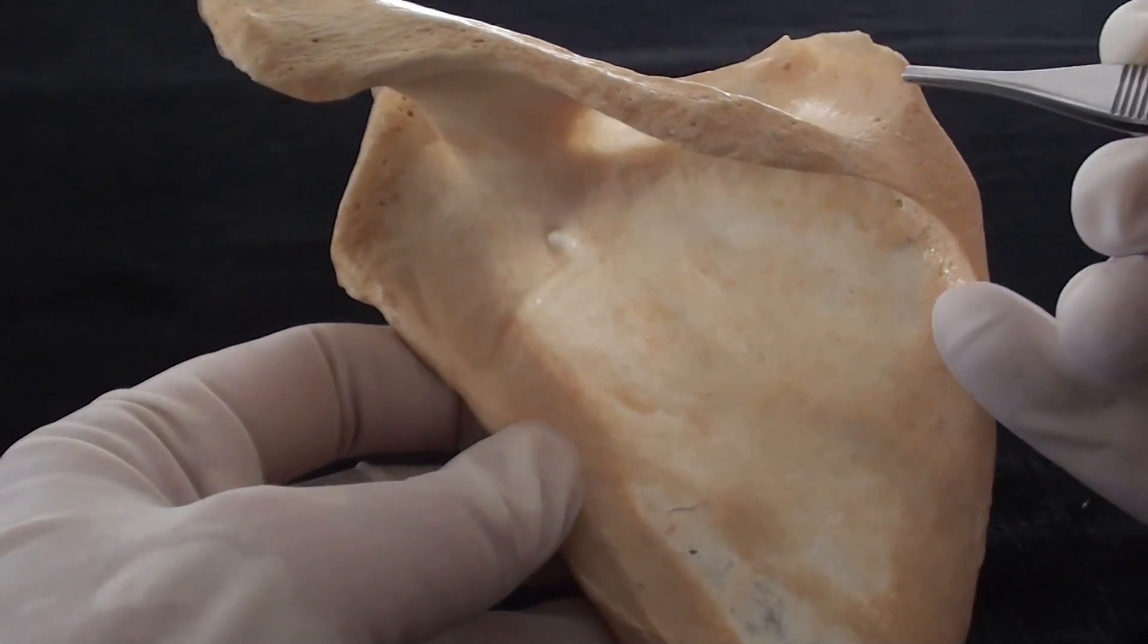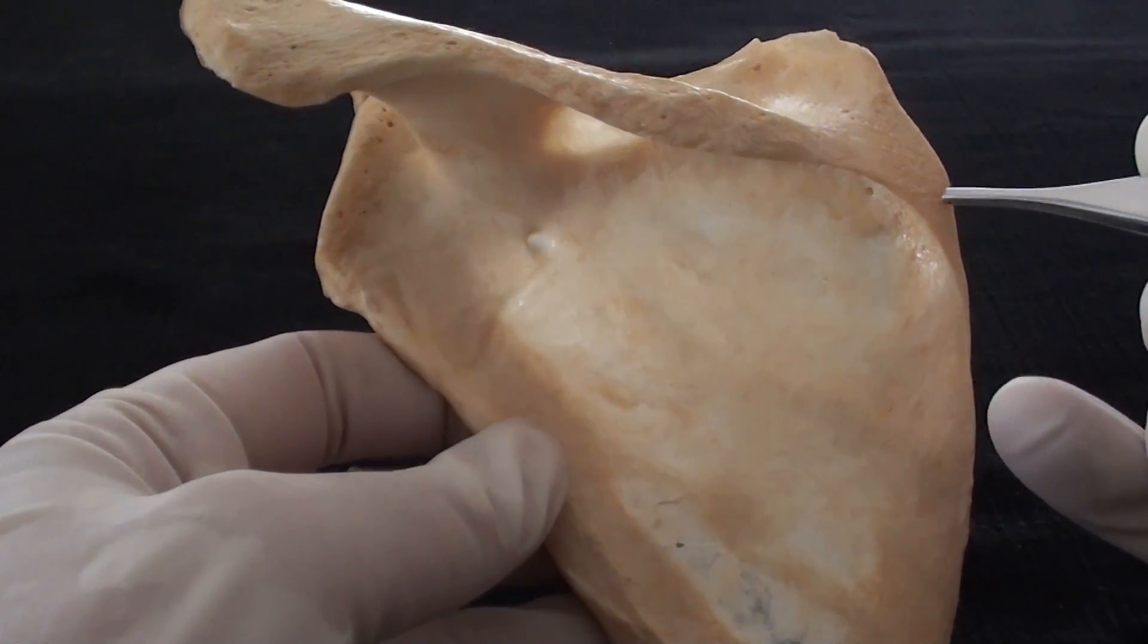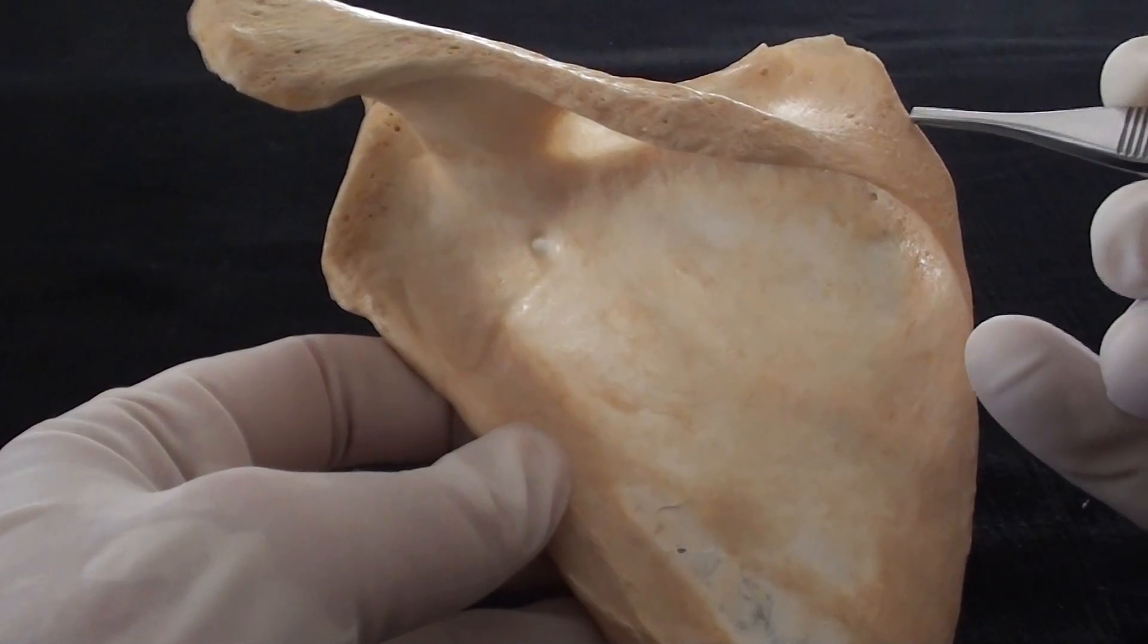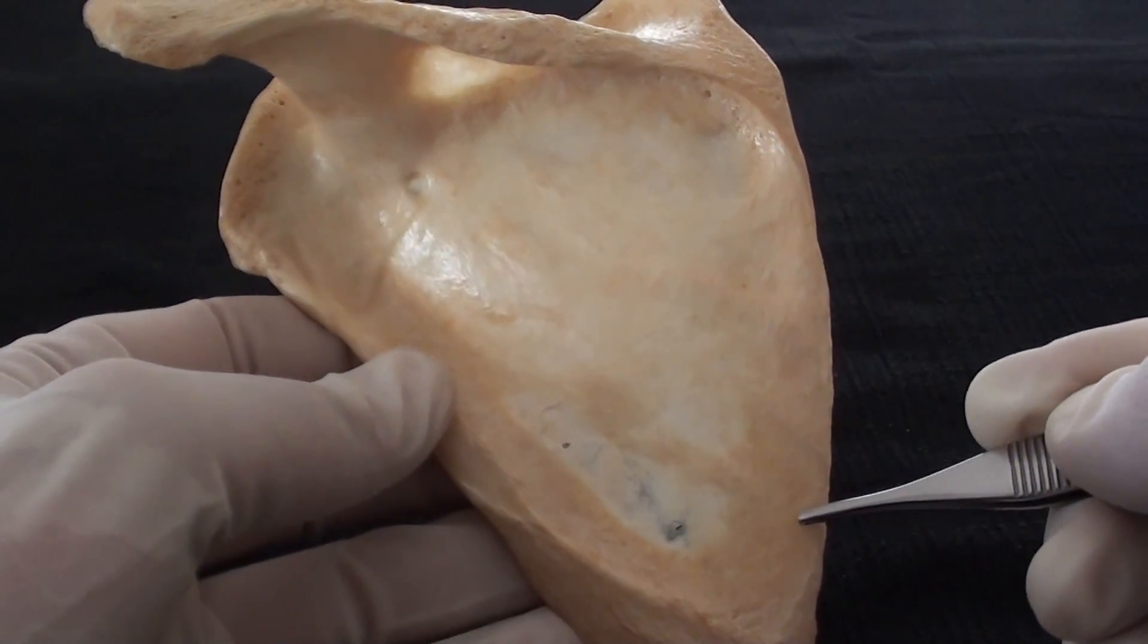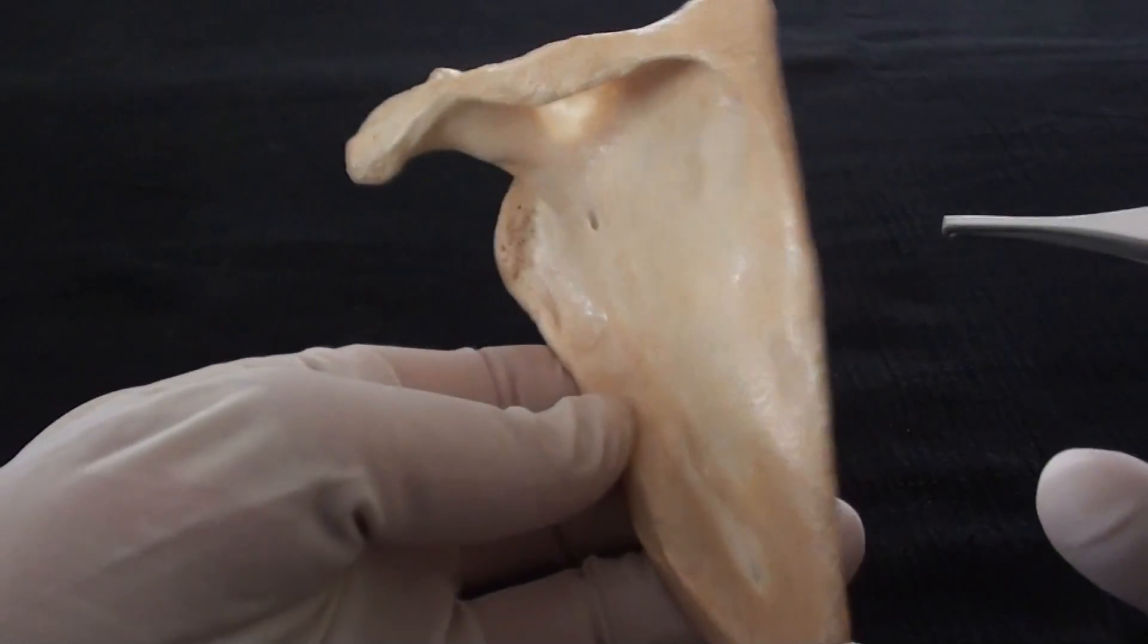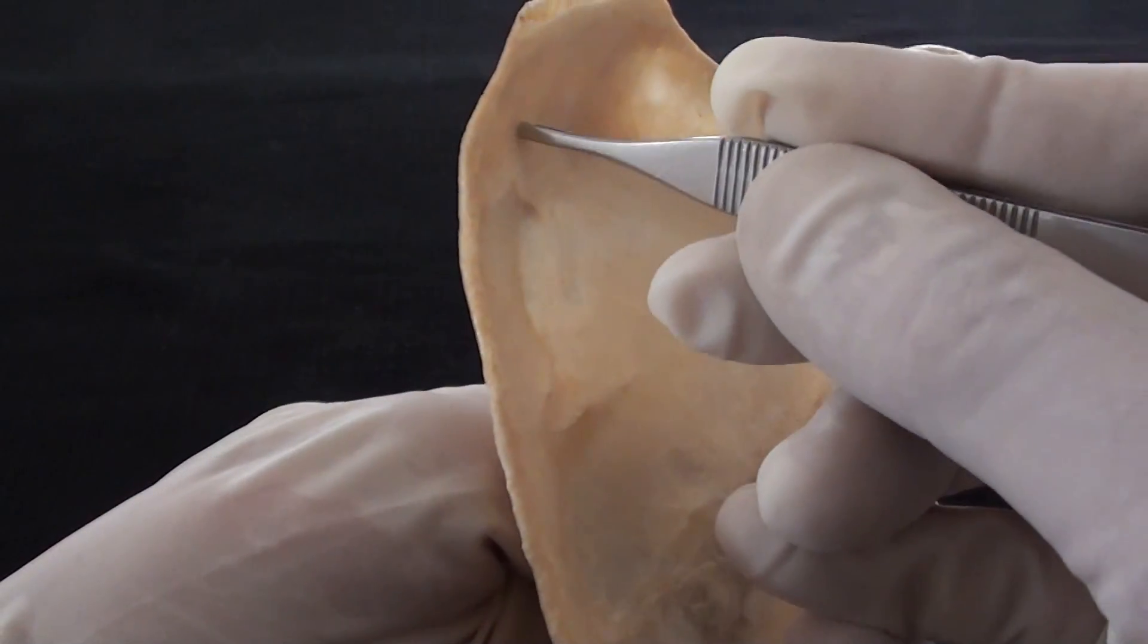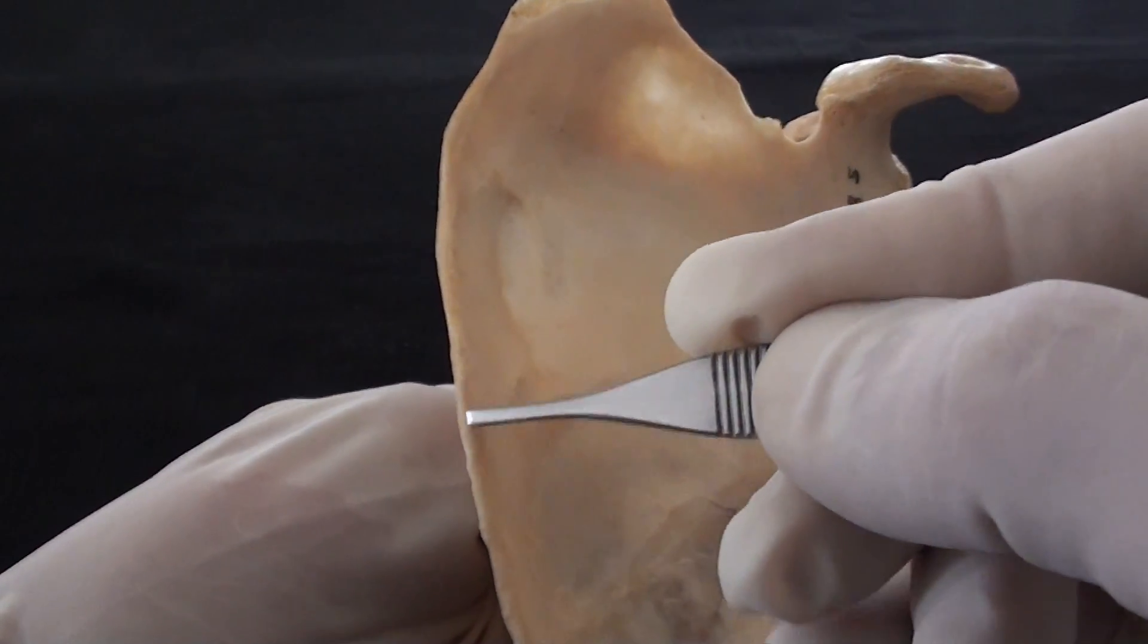To name a few the medial border of the scapula will become attachment point for rhomboid minor and then rhomboid major muscle whereas on the same landmark on a different side of the bone it will become attachment point for the serratus anterior muscle.